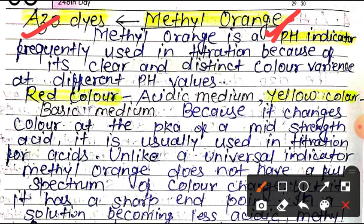The chromophore-based classification includes Azure Dyes, Anthraquinone Dyes, and Indigo Dyes. Methyl Orange is an example of Azure Dyes.